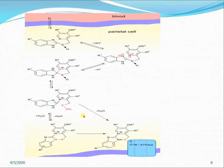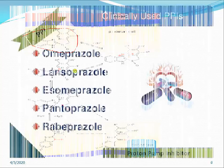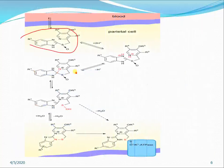In short, when the proton pump inhibitor activates in acidic environments, it forms a sulfenamide intermediate, which is covalently bonded to the ATPase enzyme — specifically the H+/K+ ATPase enzyme.